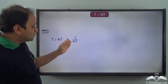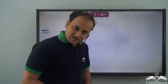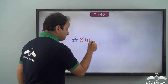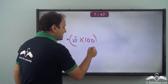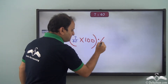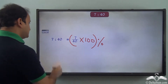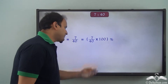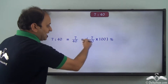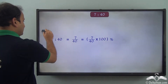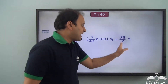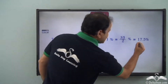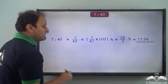Now how do we convert a fraction to percentage? We multiply this value with 100 and we place a percentage symbol beside it. So this is what we get. Now if we simplify this expression, we get 35 by 2 percent, which is nothing but 17.5 percent.